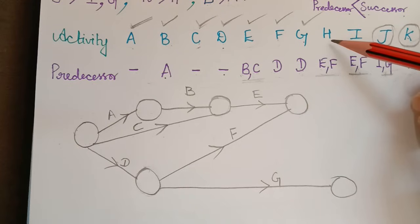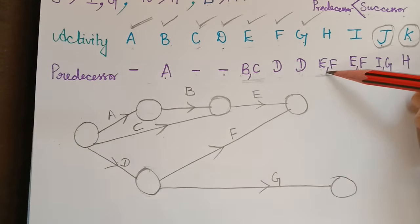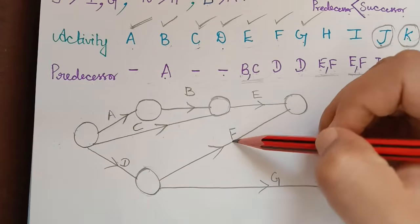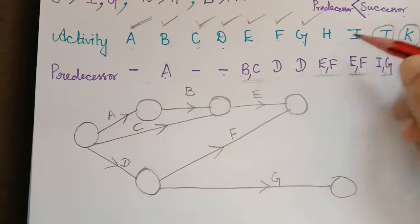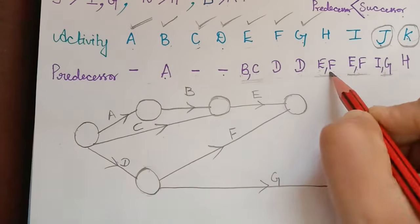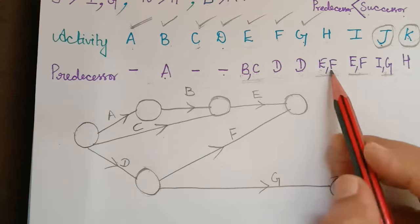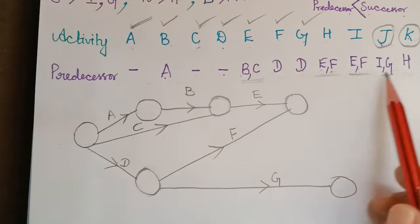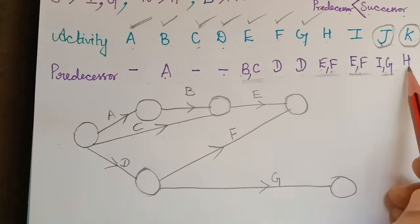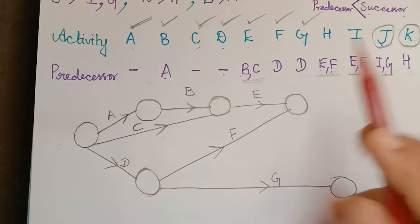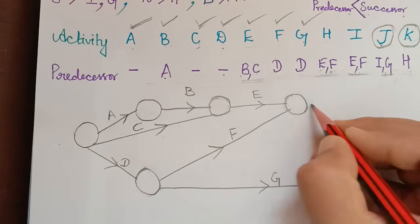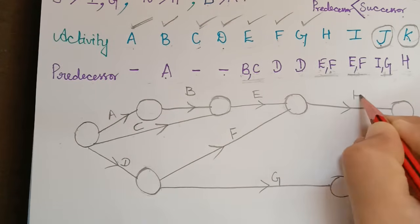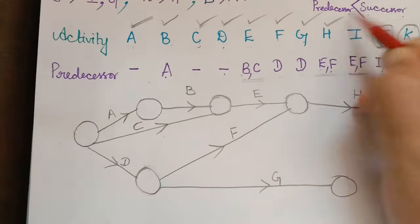Now we draw activity H. Its predecessors are E and F, so the starting node is their shared end node. Checking the predecessor list, H appears only once with no other activity alongside it. So we draw activity H directly from that node to a new end node.